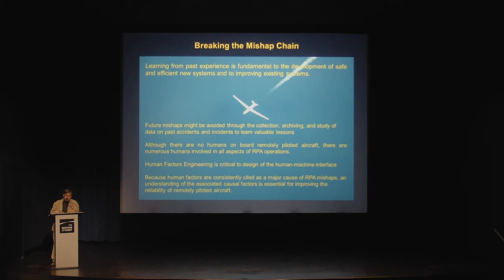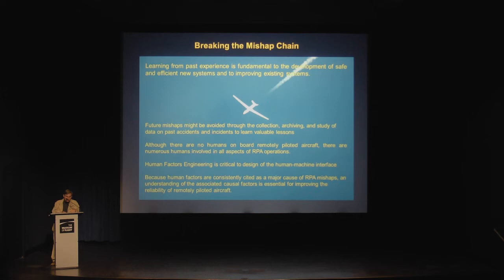Here are some of the major lessons for breaking the RPA mishap chain. Learning from past experience is fundamental to the development of safe and efficient new systems and to improving existing systems. Future mishaps might be avoided through the collection, archiving, and study of data on past accidents and incidents. Although there are no humans onboard remotely piloted aircraft, there are numerous humans involved in all aspects of RPA operations. Human factors affect RPA safety at every level of design, management, maintenance, and flight operations. Because human factors are consistently cited as a major cause of RPA mishaps, an understanding of the associated causal factors is essential for improving the reliability of remotely piloted aircraft.